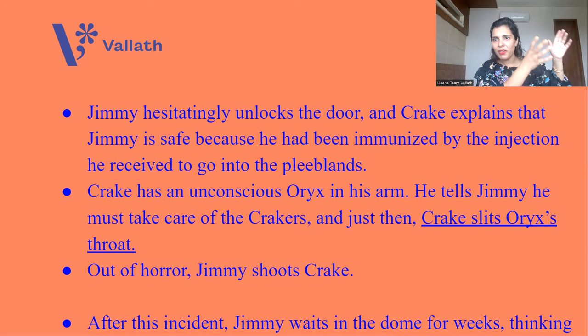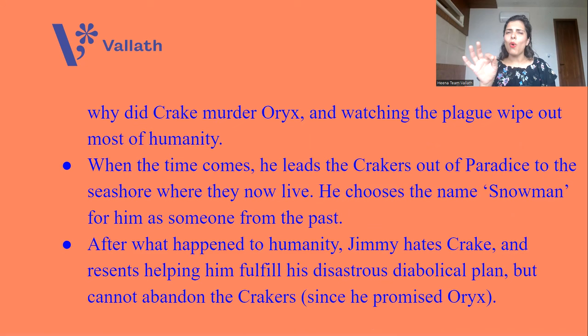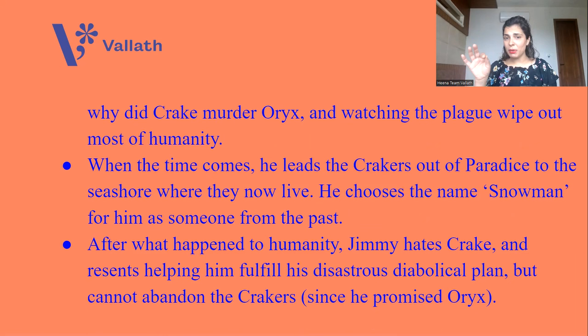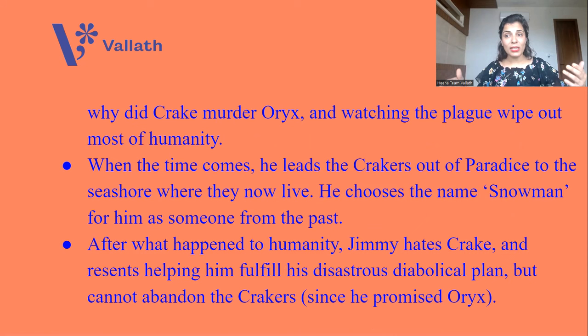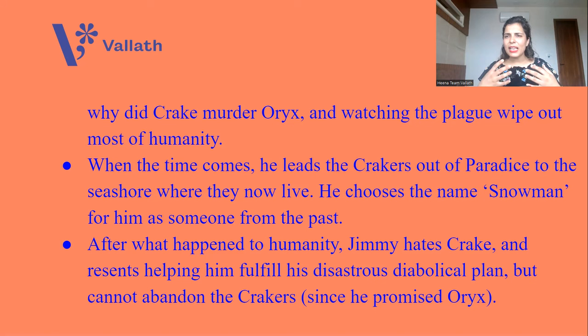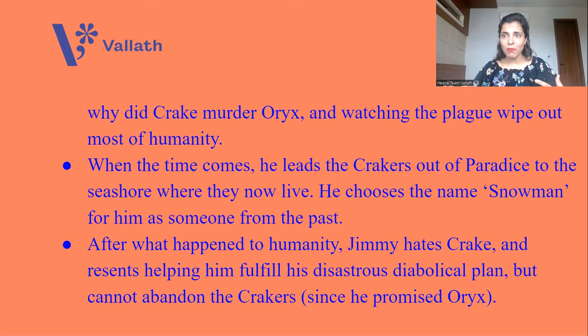Jimmy is alone. The plague is spreading outside, and Crakers are evolving as genetically modified human beings. After this incident, Jimmy waits in the dome for weeks wondering why Crake murdered Oryx, while watching the plague wipe out most of humanity on the computer screens. When the right time comes, Jimmy leads the Crakers out of Paradise to the seashore where they now live. He changes his name from Jimmy to Snowman, because he wants to be seen as someone from the past. After what happened to humanity, Jimmy hates Crake and resents himself for helping fulfil Crake's desires — Crake wanted to wipe out humanity, and somewhere Oryx and Jimmy also helped him. But he cannot abandon the Crakers because he promised Oryx.